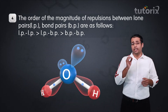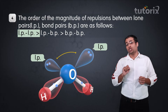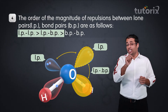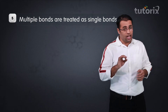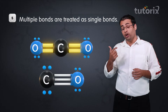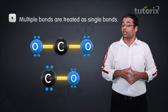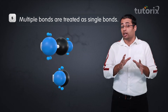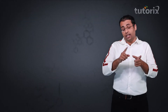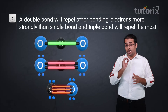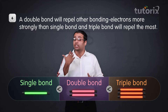The next point in this theory tells us that repulsions between lone pair and lone pair are the highest, followed by repulsions between lone pair and bond pairs, and the least repulsions are between bond pairs. If we have multiple bonds like double bonds and triple bonds, we treat these bonds as single bonds just for predicting the structure. A double bond will repel more than a single bond, and a triple bond will repel the most.